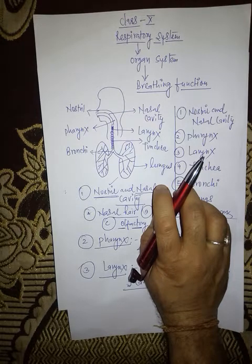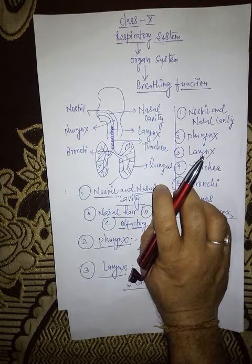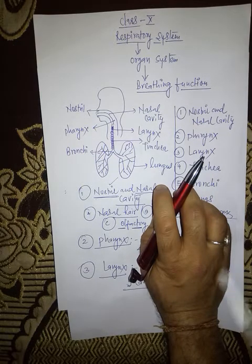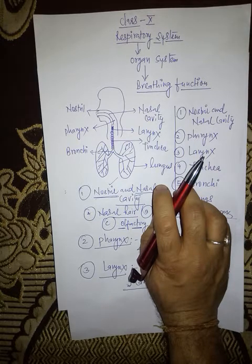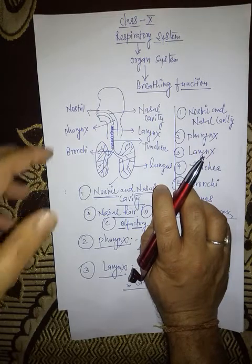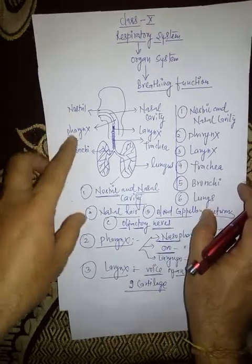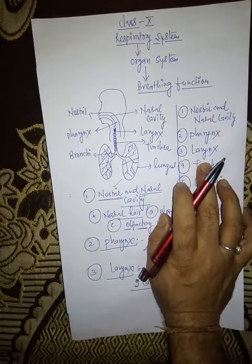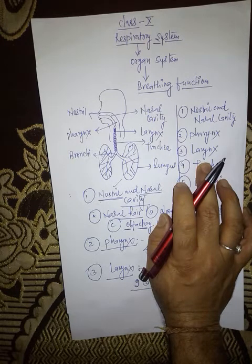The ventral side of the trachea is covered by C-shaped cartilaginous rings. These cartilaginous rings provide mechanical support to the trachea. These cartilaginous rings help to protect the trachea from constriction when air passes from one side to another side. The inner wall of the trachea is covered by stratified columnar ciliated epithelium.